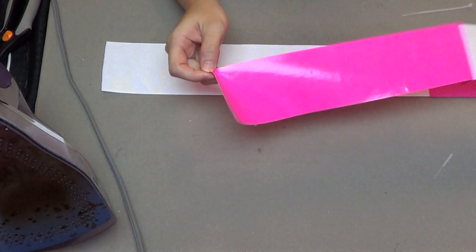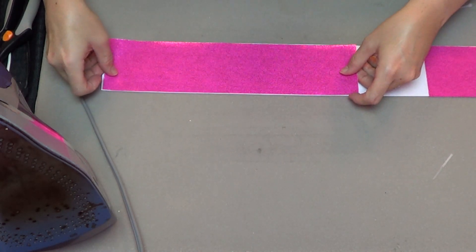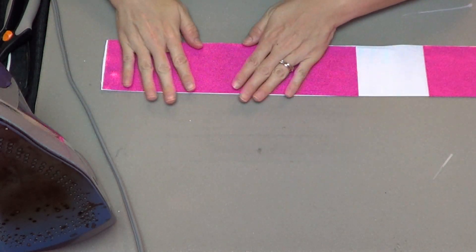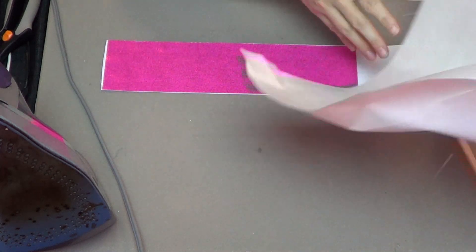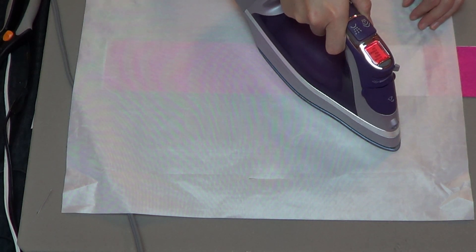All you have to do is peel that paper off the back and it's ready to be ironed on with just a regular household iron. Because spandex is very sensitive to heat, you definitely want to make sure you cover that with a cover sheet.